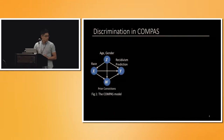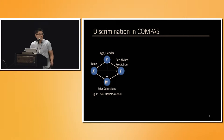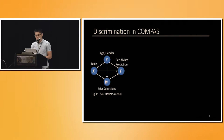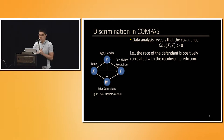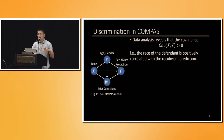We start with an example of a risk assessment tool called COMPAS, and Figure 1 shows its graphical representation. Given the race X, the prior convictions W, and other demographics information Z of a defendant, the COMPAS tool gives a risk score which predicts the likelihood of this defendant committing a future crime. A simple data analysis revealed that the covariance of X and Y is larger than zero, meaning that if you are, for example, African-American, you'll be more likely to get a high risk score compared to someone like a Caucasian.